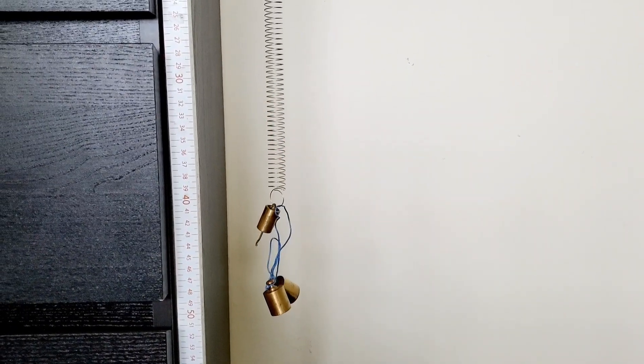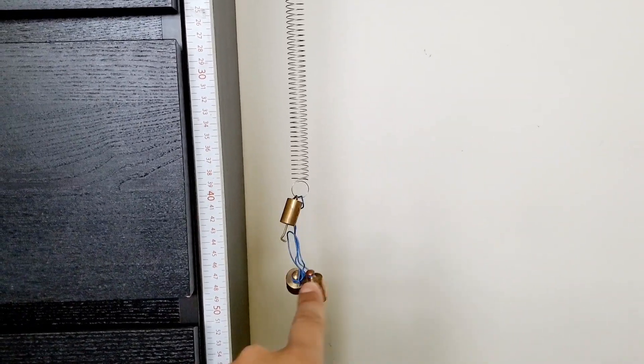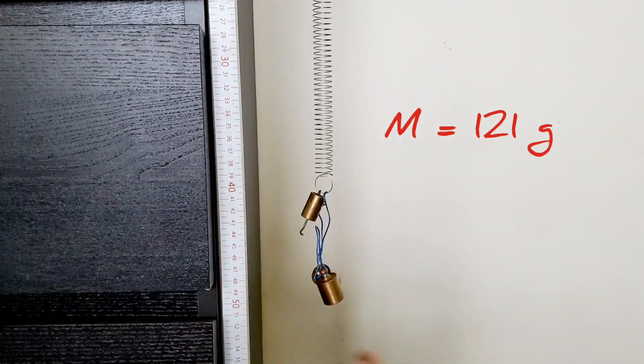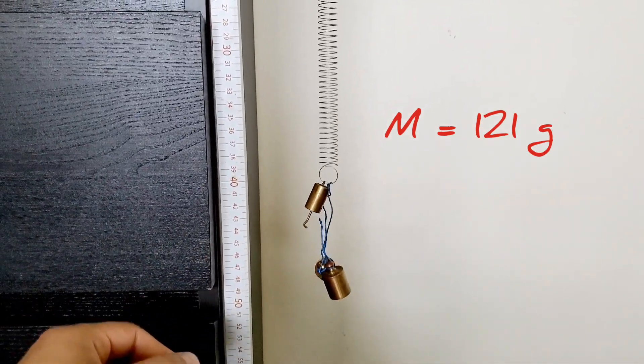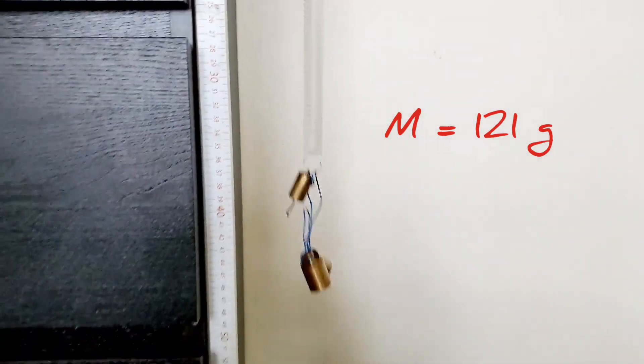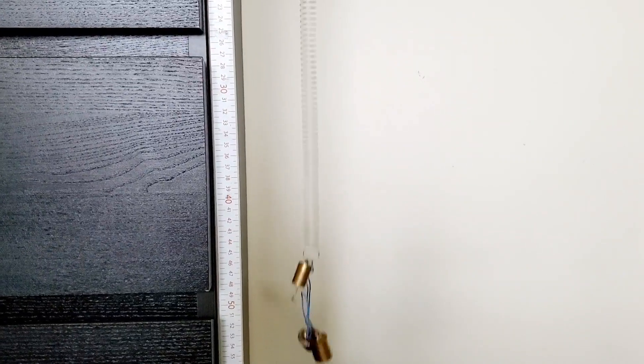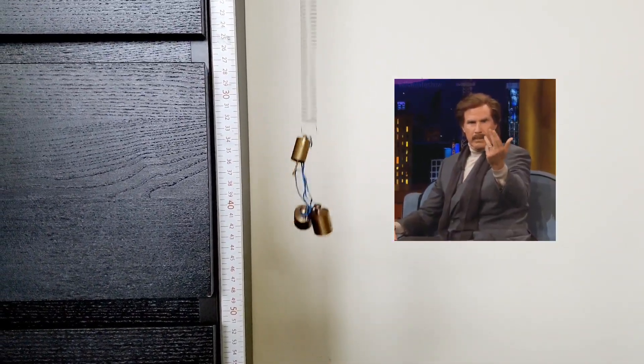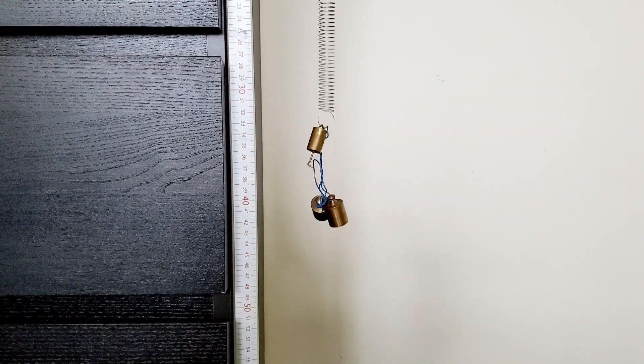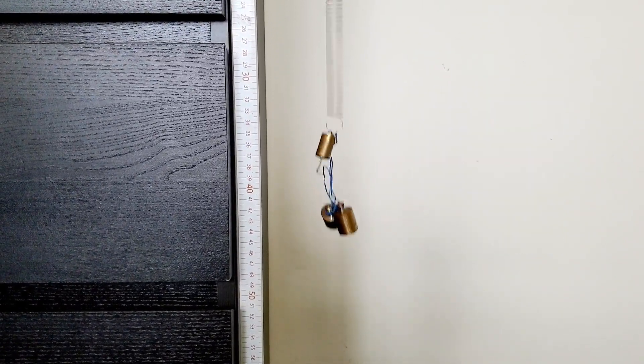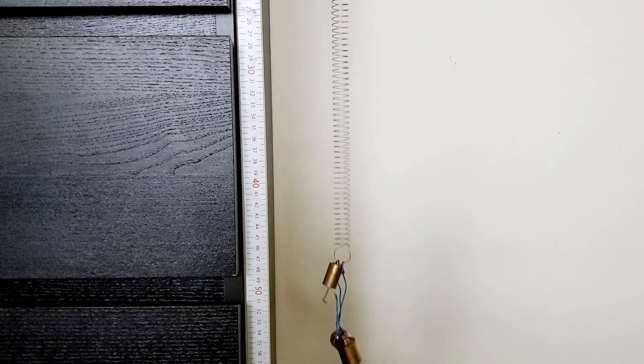All right, so here's the third mass. We have the 101 grams plus the 20 grams right there. So the total mass is whatever that value is when you add it together. I'm going to let it oscillate, and then you can start whenever you want. And I will stop it here.